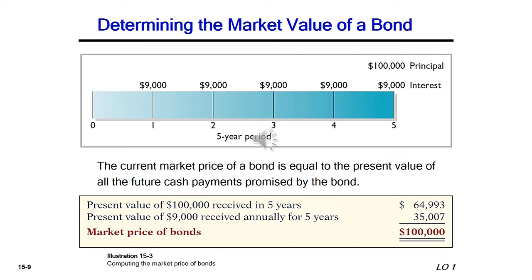The current market price of a bond equals the present value of all future cash payments promised by the bond. We have two types of payments: the $100,000 lump sum at the end of year five, discounted using a simple present value formula over five years, giving us $64,993; and the present value of an annuity where the payment is $9,000 discounted over five years, giving us $35,007. Adding those two together gives a market price of $100,000.